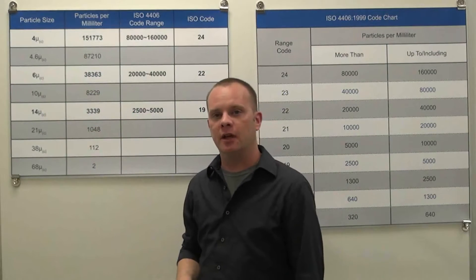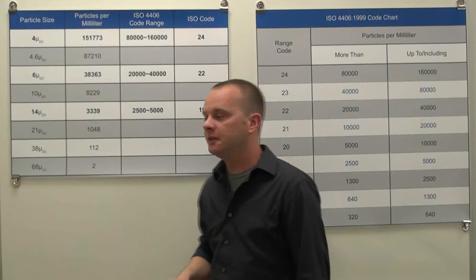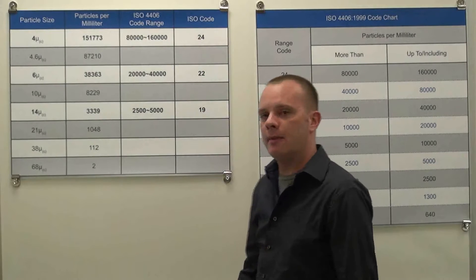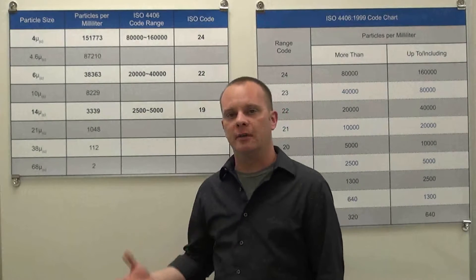The ISO fluid cleanliness code is always expressed as three numbers, such as 24, 22, 19. Each number represents a contamination code for the correlating particle size.